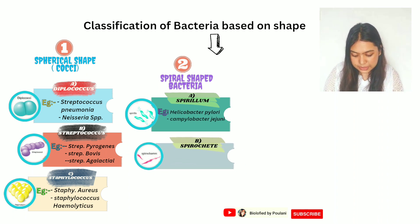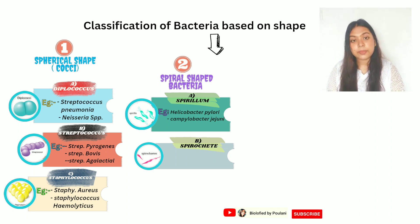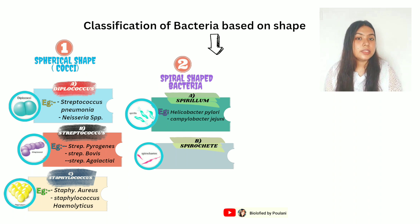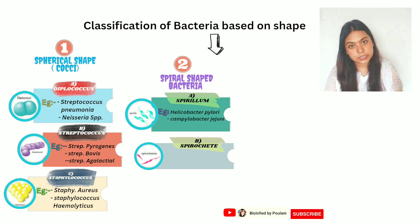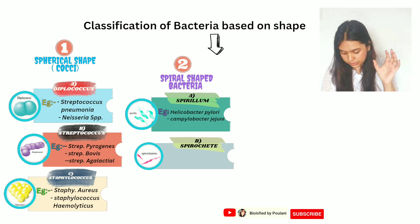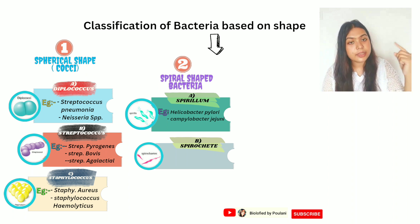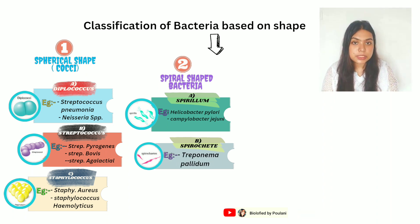Under Spirillum shape, Helicobacter pylori causes gastritis and stomach diseases. Campylobacter jejuni causes campylobacteriosis. The helical and flexible spirochete-shaped bacteria include Treponema and Borrelia. Spirillum-shaped bacteria are long, helical, and curved, while spirochete-shaped bacteria are flexible.